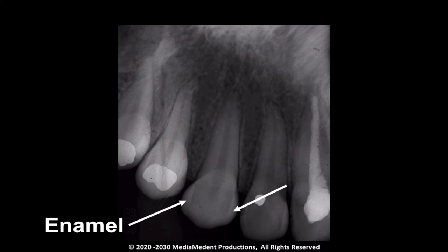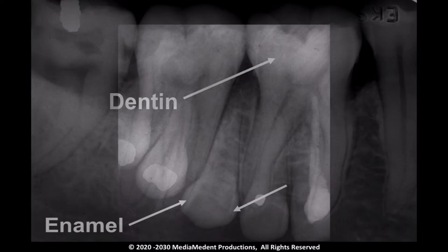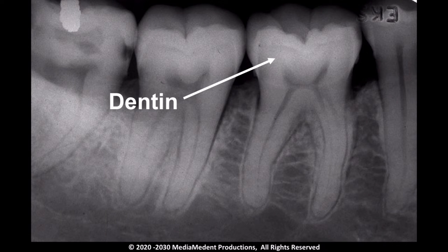Of the naturally occurring substances in the body, tooth enamel is the most dense. Because of its physical density, enamel appears more radiopaque or light than any other natural substance imaged. Dentin is less dense than enamel and, as a consequence, less radiopaque.